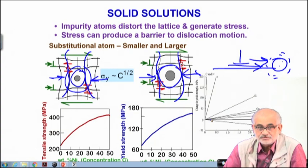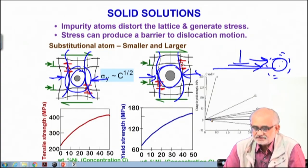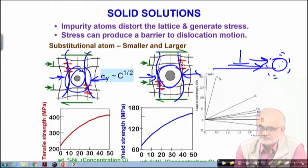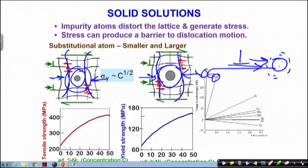There is a limit to how much you can pack solute atoms into the material, dictated by the equilibrium solubility. For interstitial elements like carbon or nitrogen, even very small amounts can very drastically increase the strength. For most other elements, strengthening occurs through this solid solution strengthening mechanism.